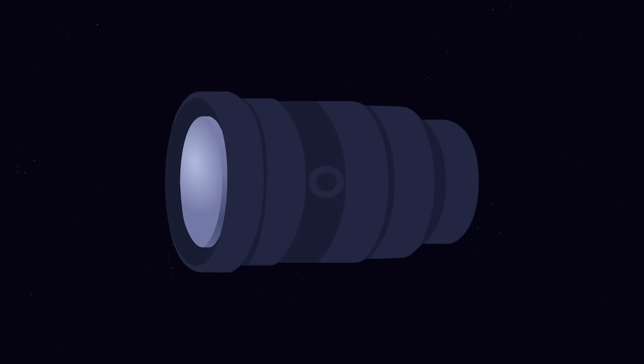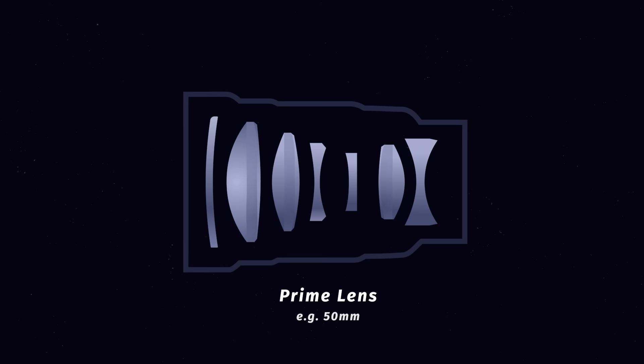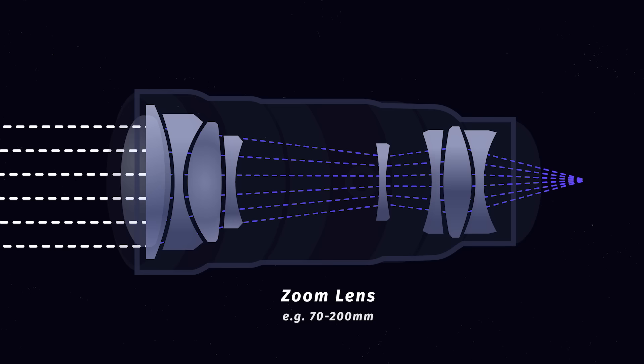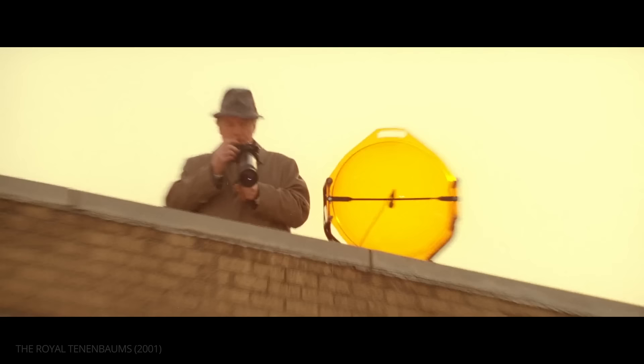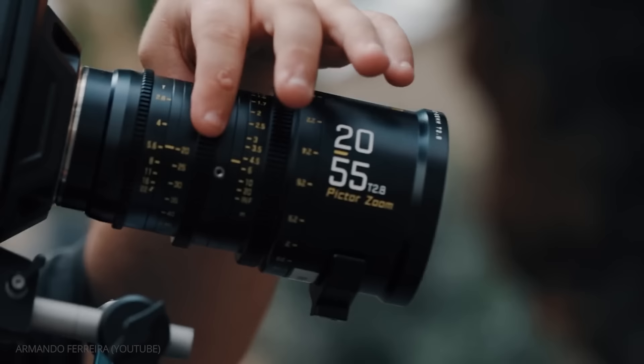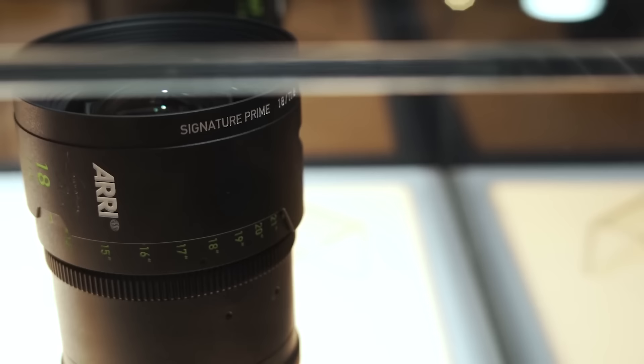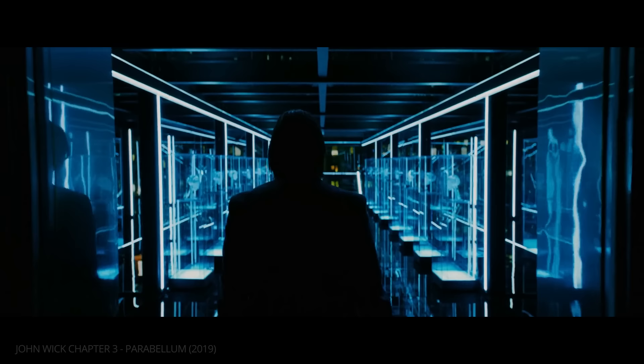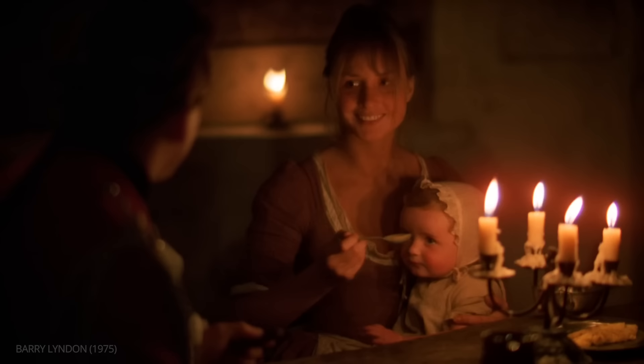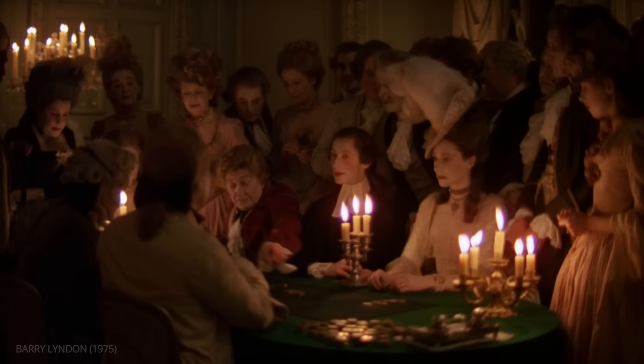All lenses fall under two categories: prime lenses or zoom lenses. A prime lens has a fixed focal length, while a zoom lens can vary its focal length by adjusting various lens elements. In comparison with zoom lenses, prime lenses have fewer lens elements that can produce sharper images. Their larger apertures also let in more light for low-light shots, like Kubrick's iconic candlelit scenes in Barry Lyndon.